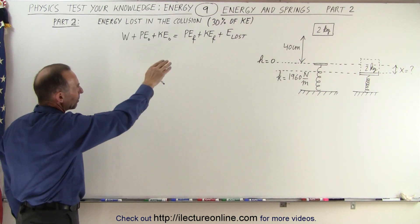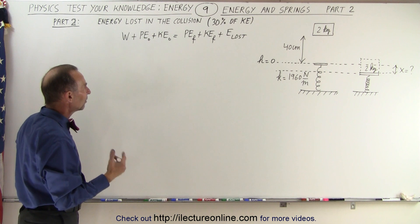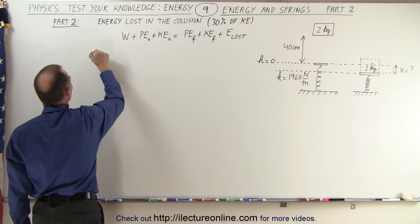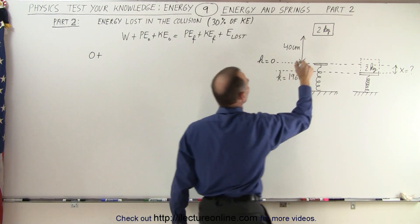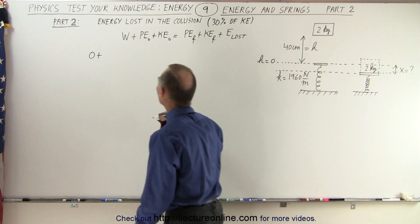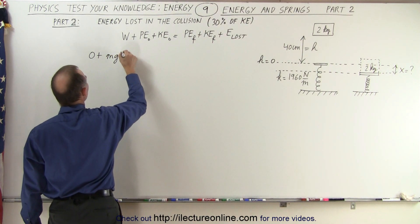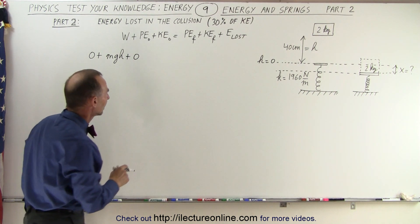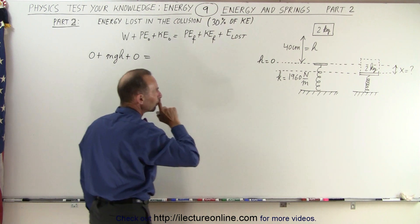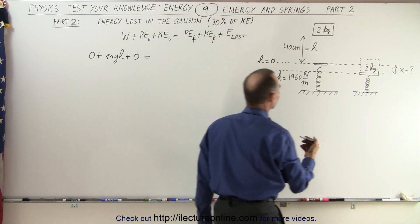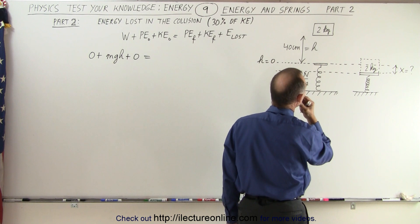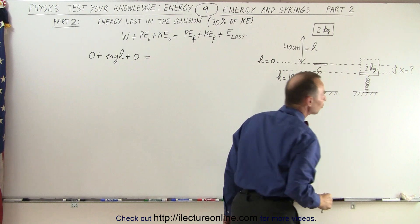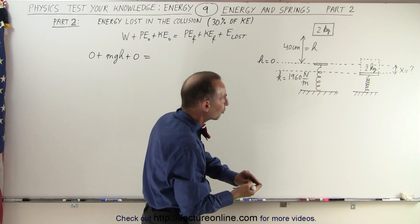We still want to use the same equation as before. First of all, is there any work put into the system? The answer is no. What is the original potential energy? We'll say the original potential energy would be MGH plus zero, because there was no initial kinetic energy. That equals the potential energy final. The final potential energy will be the energy stored in the spring, and then of course we have a loss of potential energy as the object gets squished down.